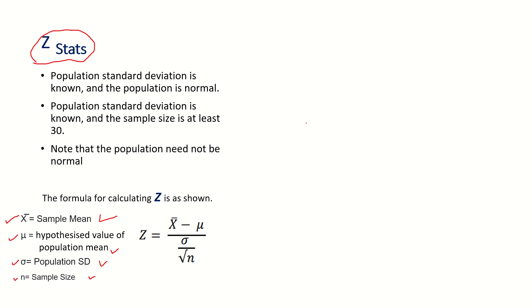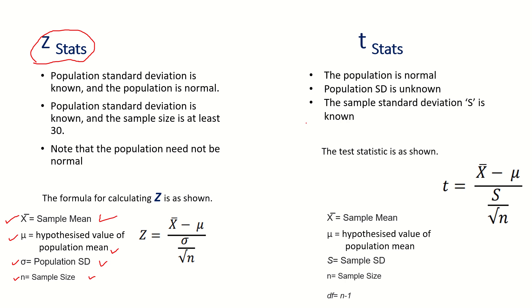T statistics is used when the population is normal but the population standard deviation is not known. Instead, the sample standard deviation S is given. The T statistic formula is: T equals X-bar minus mu, divided by the sample standard deviation S divided by root n.